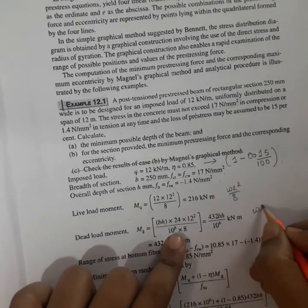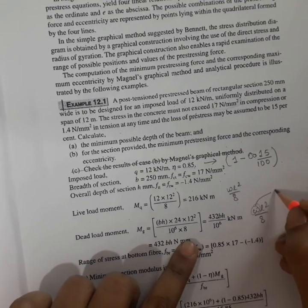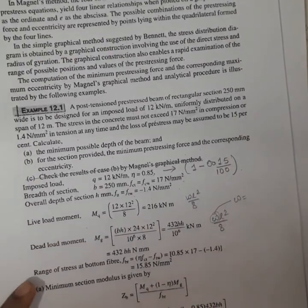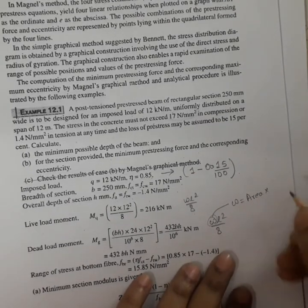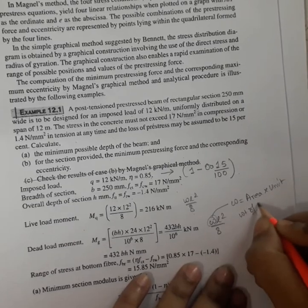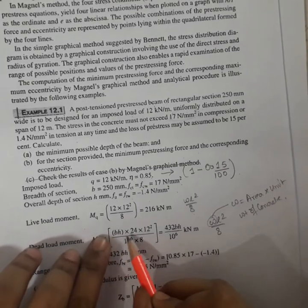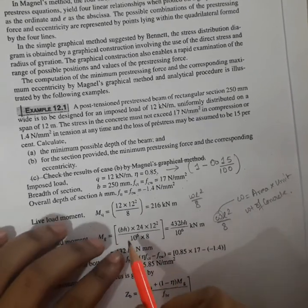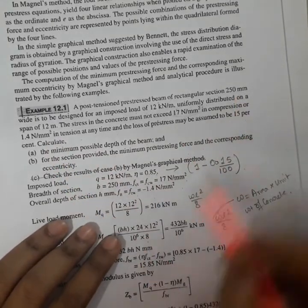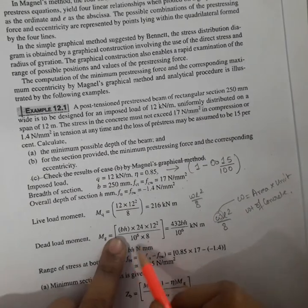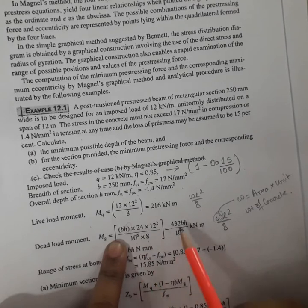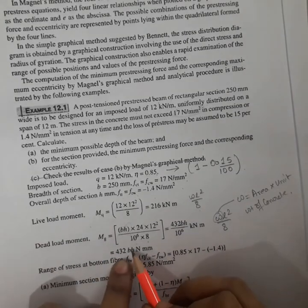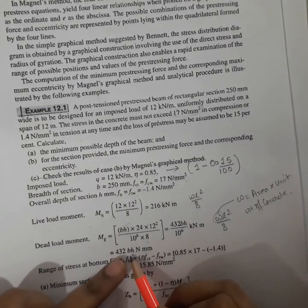The dead load moment will also be wL²/8, where w has to be calculated as it has not been given. The uniformly distributed load will be area into the unit weight of concrete. This gives an expression with area into unit weight of concrete into L², divided by 8. Since b is given in millimeters and h is also in millimeters, we divide by 10 to the power 6. Since h is unknown, we get the expression in terms of h.